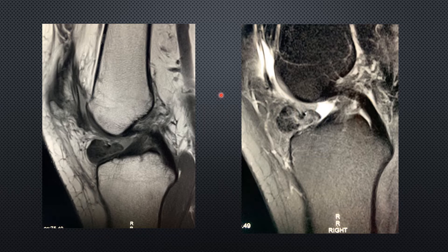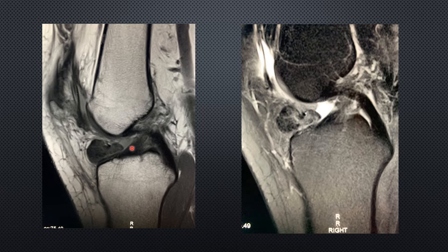The first case shows sagittal T1 and T2 with fat suppression images of the knee joint. We see a well-defined mass at the infrapatellar fat pad, also known as the Hoffa's fat pad. It shows regions of intermediate and low T1 signal intensity as well as low T2 signal intensity. Inside the lesion we see some regions of intermediate to high T2 signal intensity. There is no significant surrounding edema. This lesion is anterior to the tibial attachment of the ACL, and it is probably causing impingement and mechanical problems.